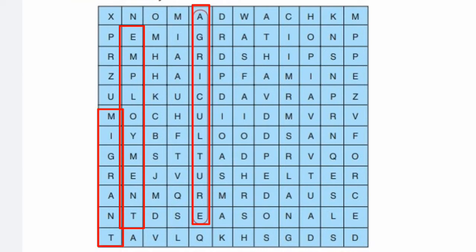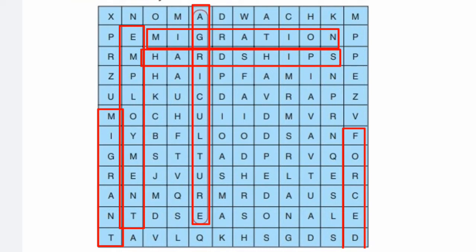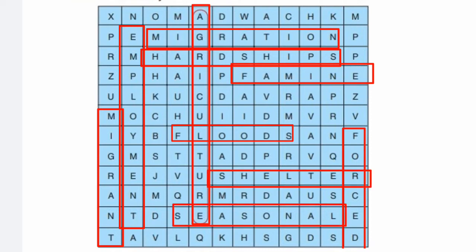The remaining words in the grid are: migrant, port, migration, hardships, famine, plots, shelter, and seasonal.